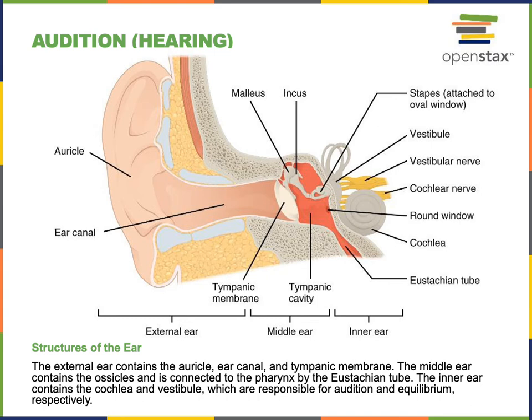As the tympanic membrane vibrates, auditory ossicles, which are three small bones of the middle ear, relay vibrations to the inner ear, producing pressure waves that travel through the fluid of the inner ear.